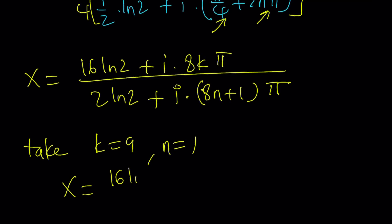x = (16 ln 2 + i·8kπ)/(2 ln 2 + i·(8n+1)π). If k equals 0, you're going to get 0 from here. And the bottom is going to give you 2 ln 2 plus, if n is 1, you're going to get i times 9π.